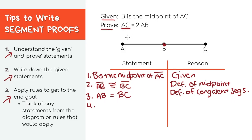Just looking at the diagram, we know that AC equals AB plus BC, right? Let's write that down. For the reason that's just the segment addition postulate.